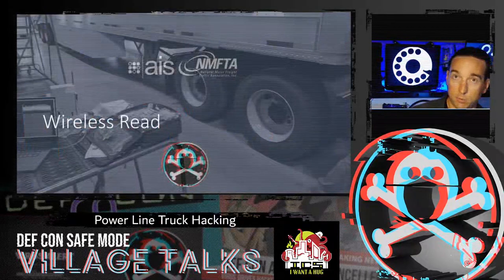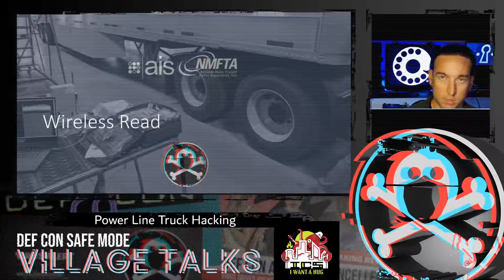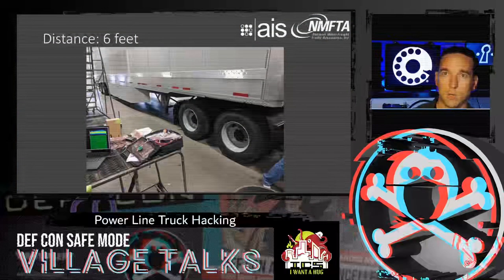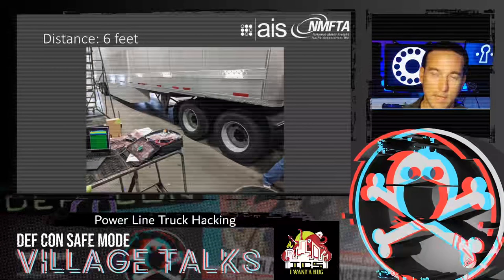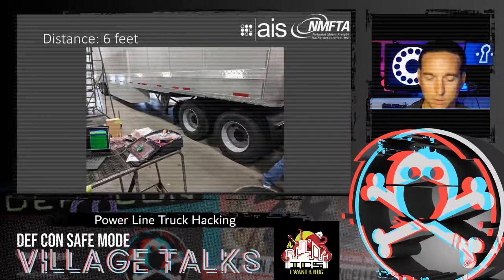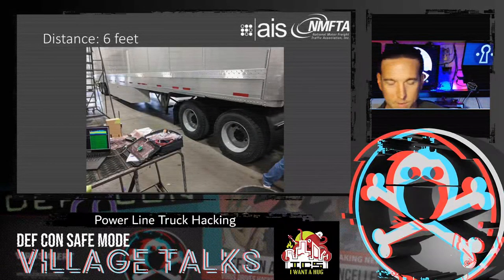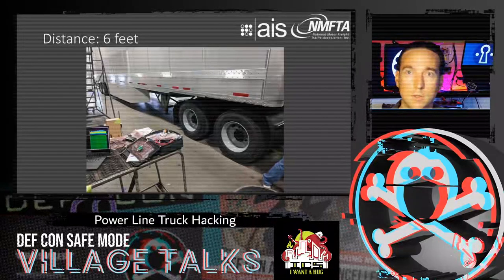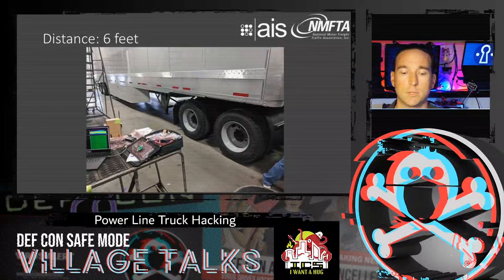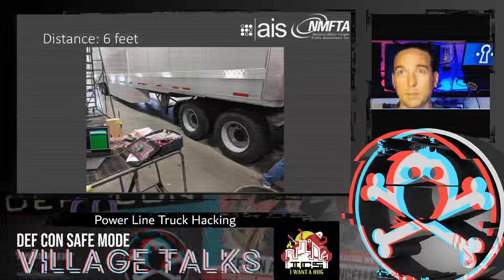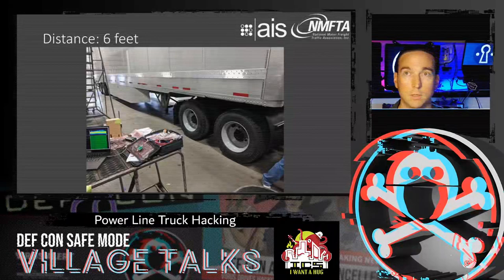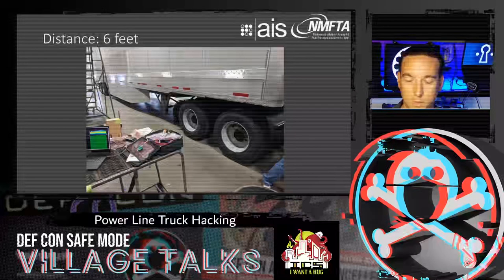We can reliably receive at six feet away from a position next to the gap between the tractor and trailer. This was using our first GNU Radio receiver version using phase measurements, not the newer correlation-based approach Chris described. We feel confident the range can be extended, and post-COVID testing will determine how far.